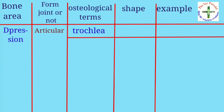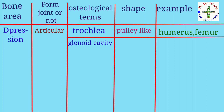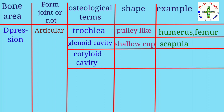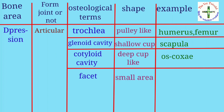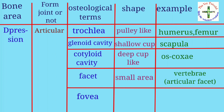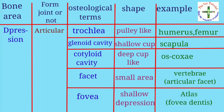In the depression section, under articular: first is trochlear, shape is pulley-like, example humerus and femur. Second is glenoid cavity, shape is shallow cup-like, example scapula. Third is cotyloid cavity, shape is deep cup-like, example coccyx. Then facet, shape is small area, example vertebra. Then fovea, shape is shallow depression, example atlas — fovea dentis.